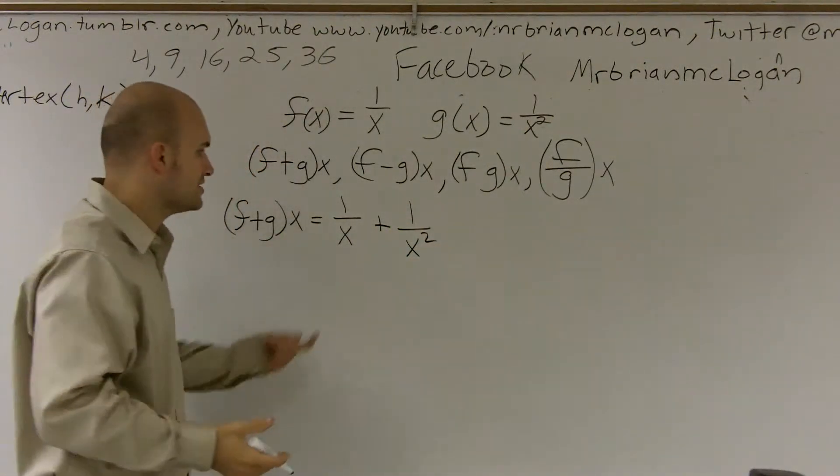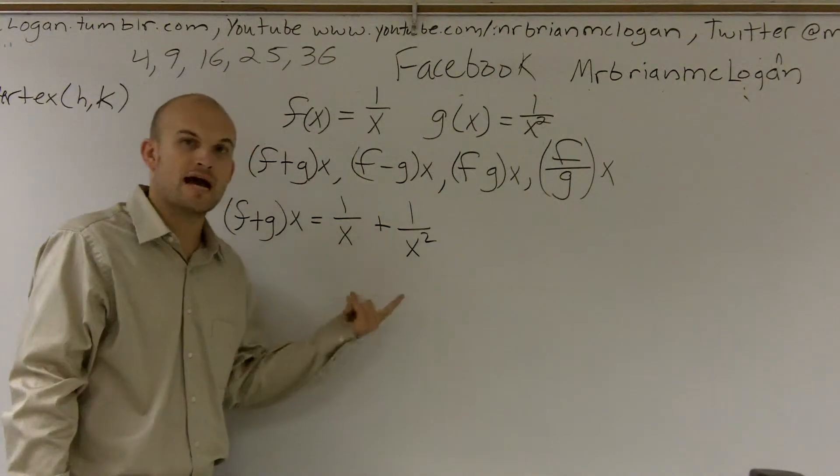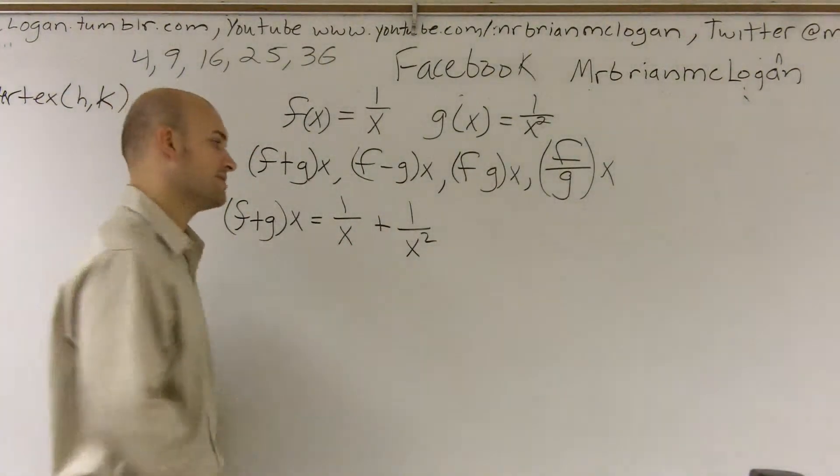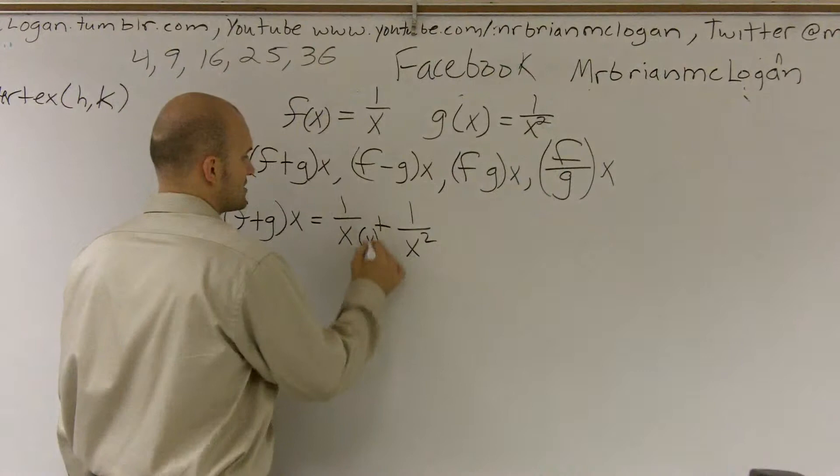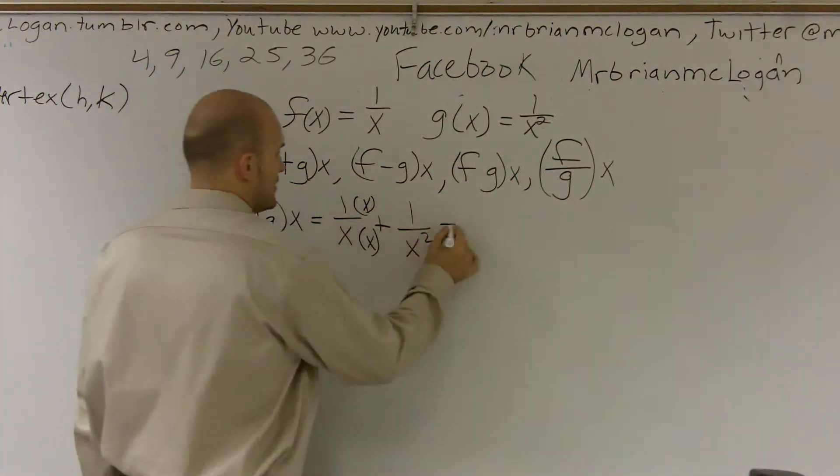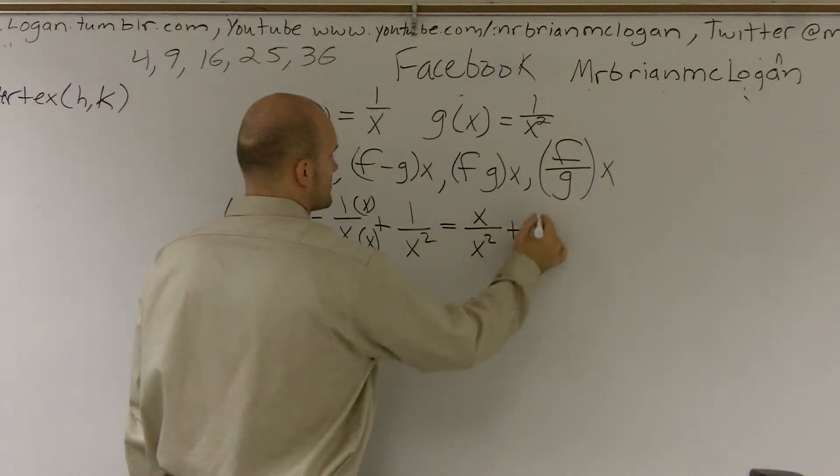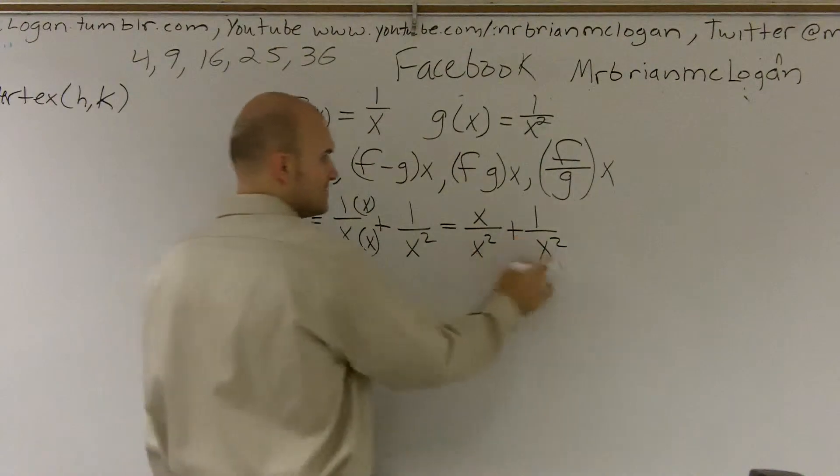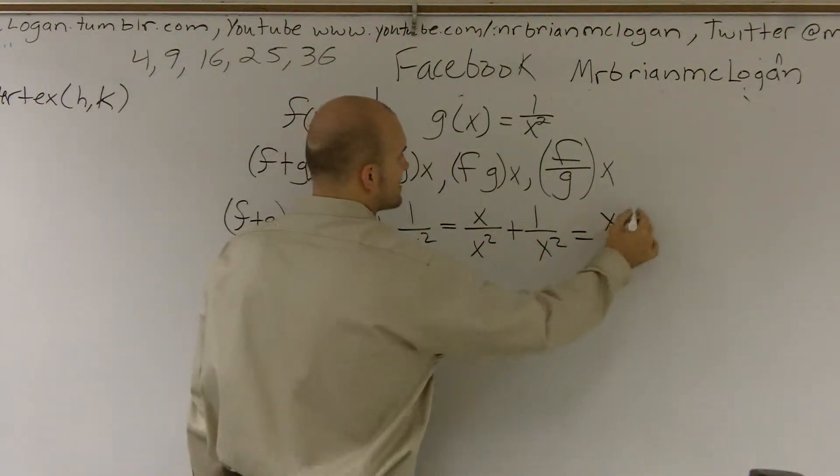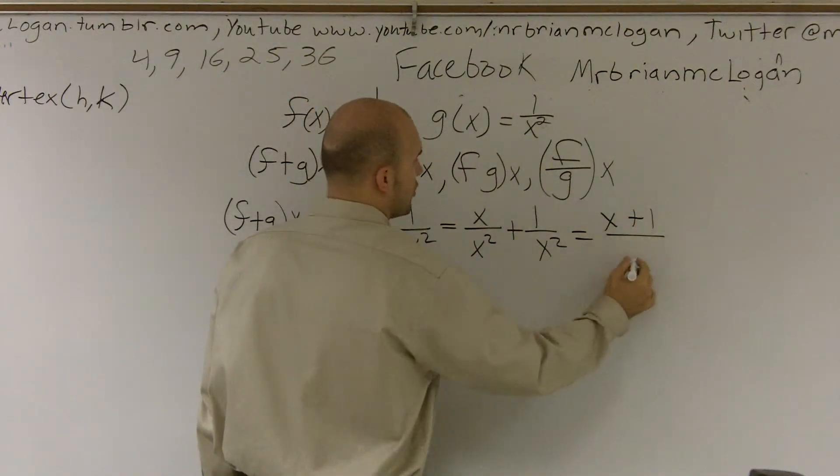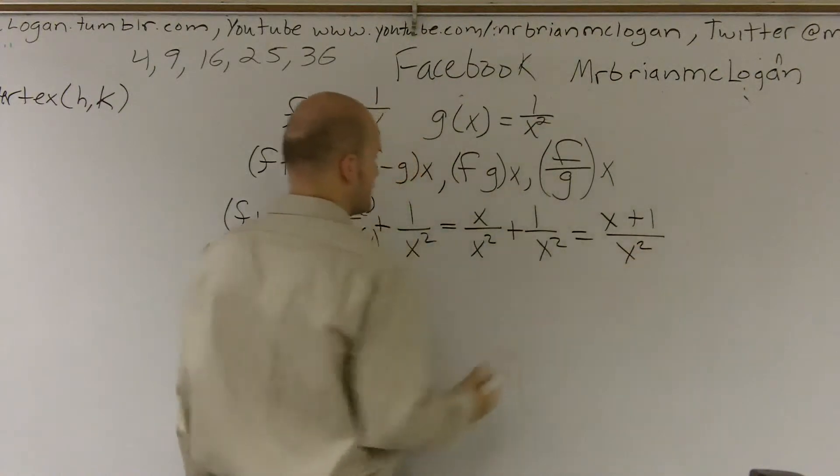Now, just like any other fractions, you can't add fractions unless you have common denominators. So to get these to be common denominators, I'm going to have to multiply by x over x. Therefore, I'll obtain x over x squared plus 1 over x squared. Now I can combine my fractions with the same denominator, and I'll be left with x plus 1 over x squared.